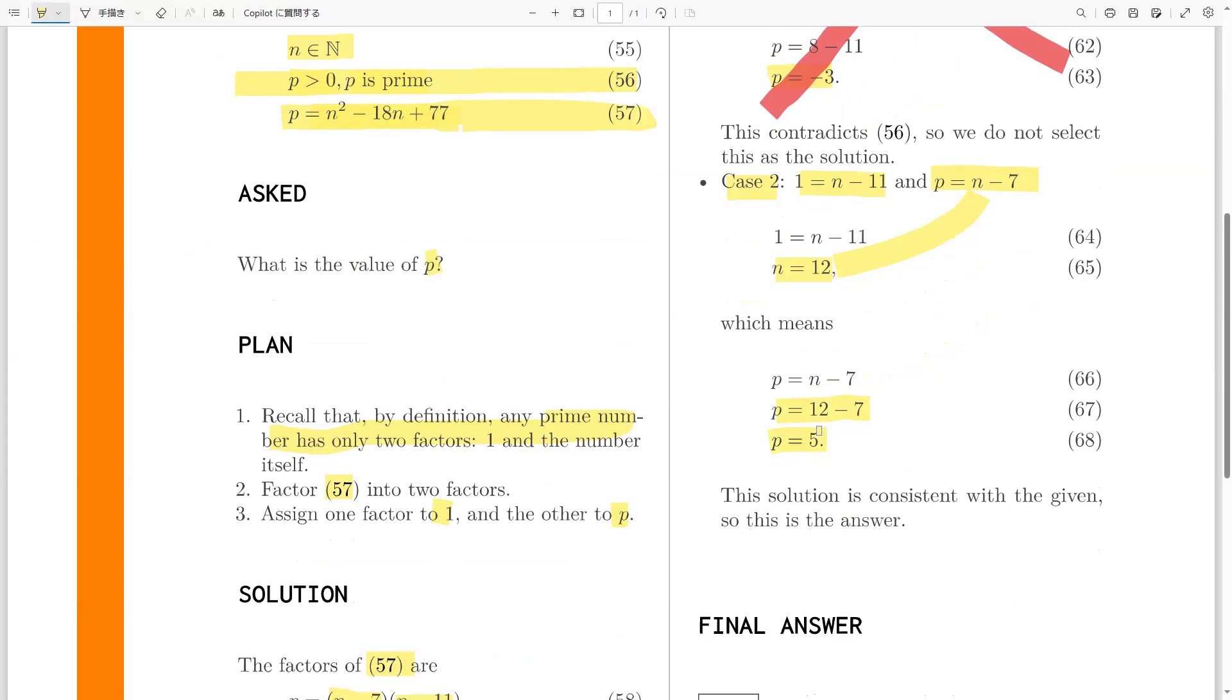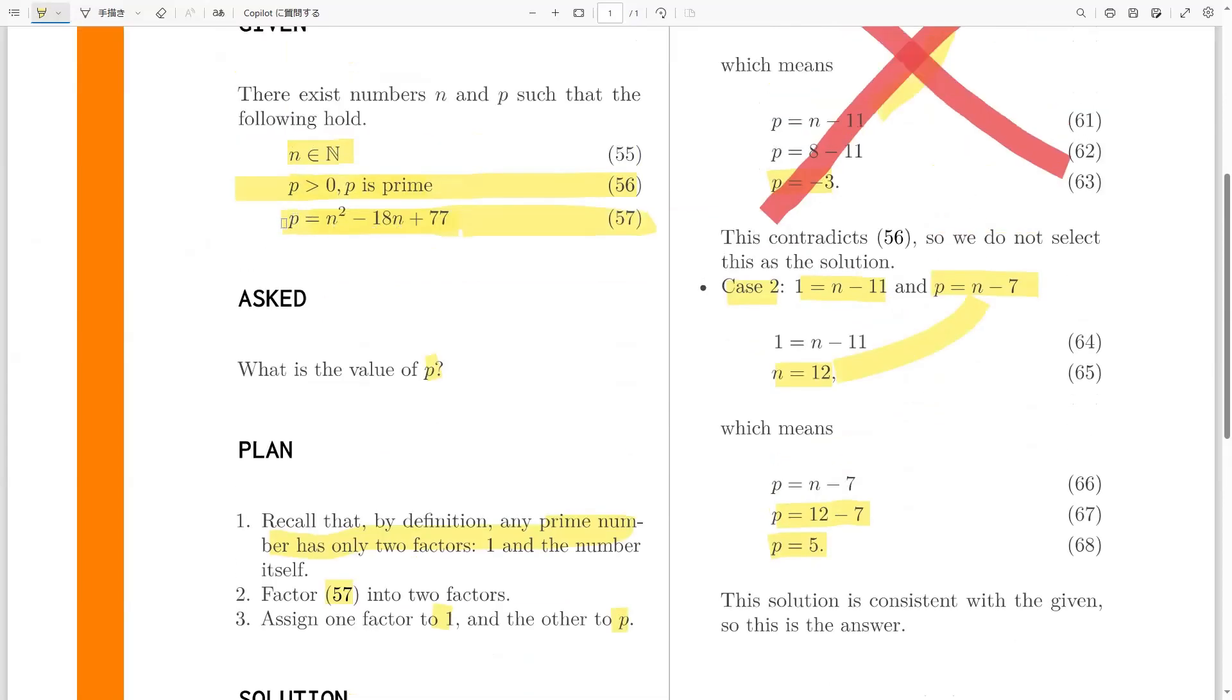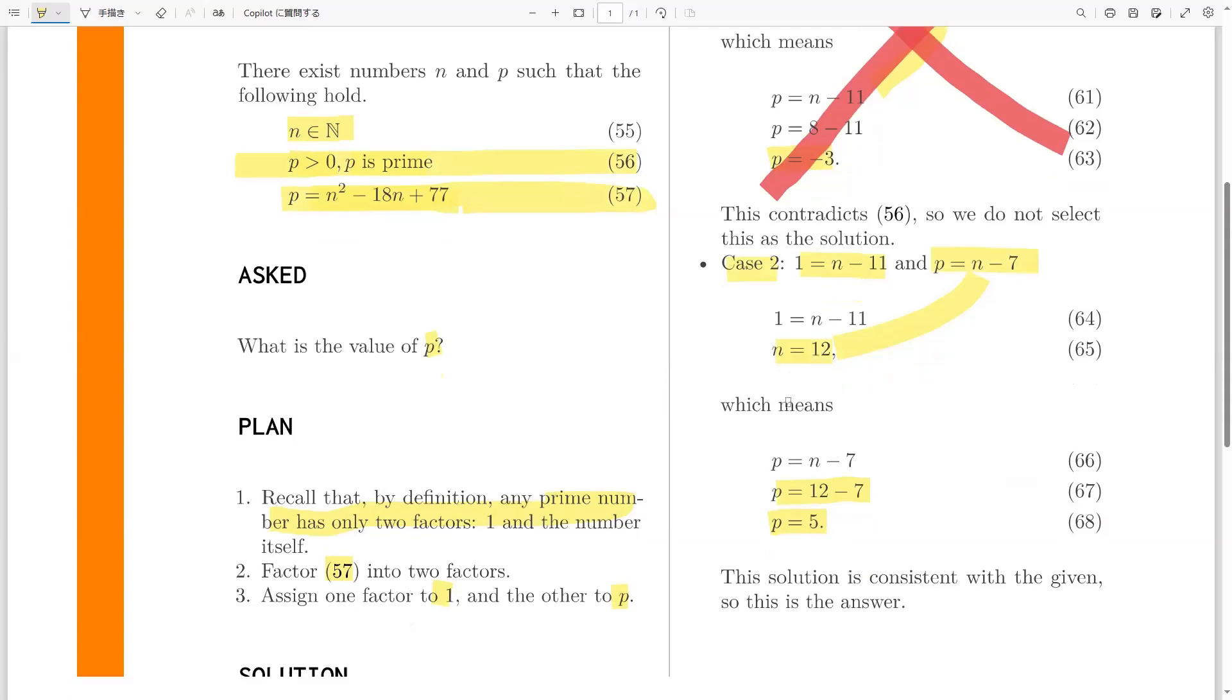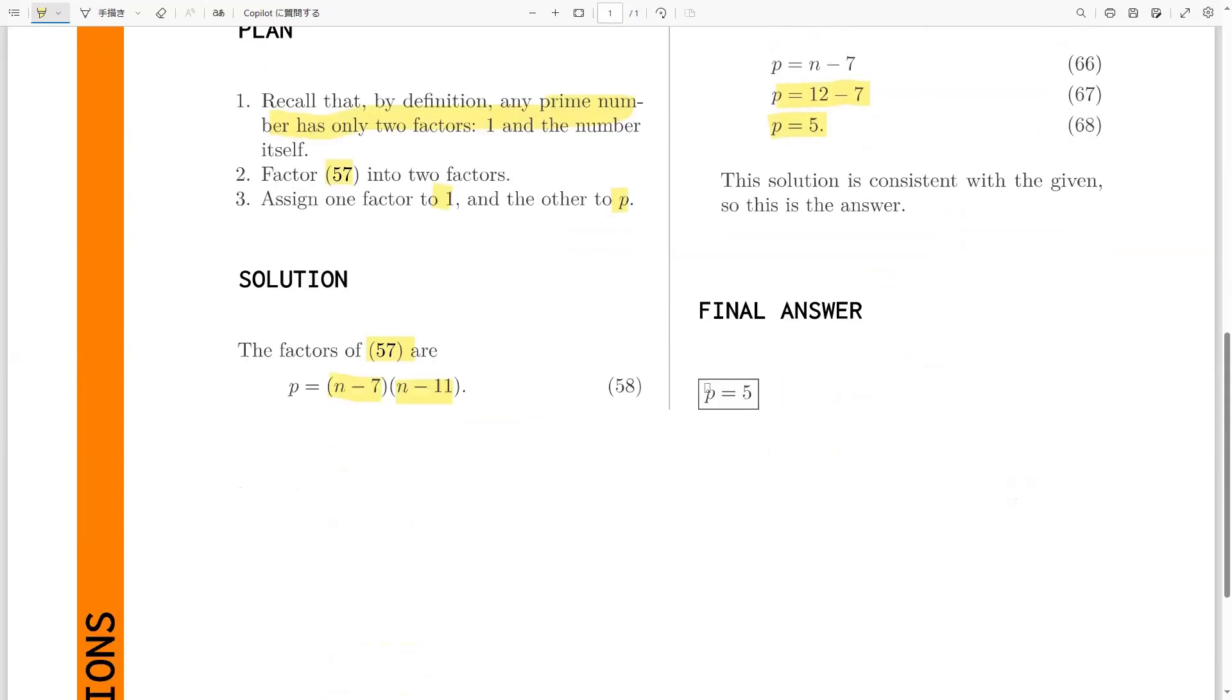And very easily, you can plug in these two values of p and n in here, and you will see that this equation 57 holds when p is 5 and n equals 12. And what that tells us is that this is our solution, p equals 5, and this is what the problem is looking for.